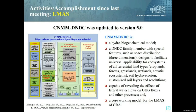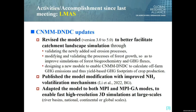This model is used as a core working model for our network. Since last meeting, we have revised the model from its third version to its fifth version to better facilitate continental-scale landscape simulations, through validating newly added soil erosion processes, modifying and validating processes of forest growth to improve simulations of forest biogeochemistry and greenhouse gas fluxes, and designing a new module to calculate off-farm greenhouse gas emissions and yield-based greenhouse gas footprint of crop production. We have also published model modifications with improved ammonia volatilization mechanisms.